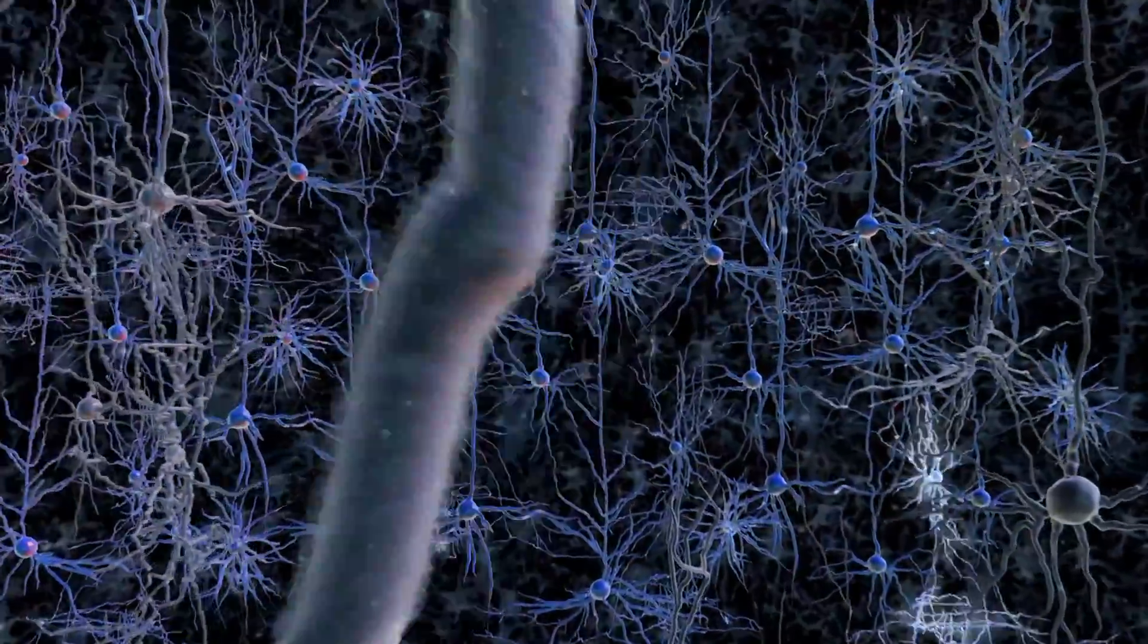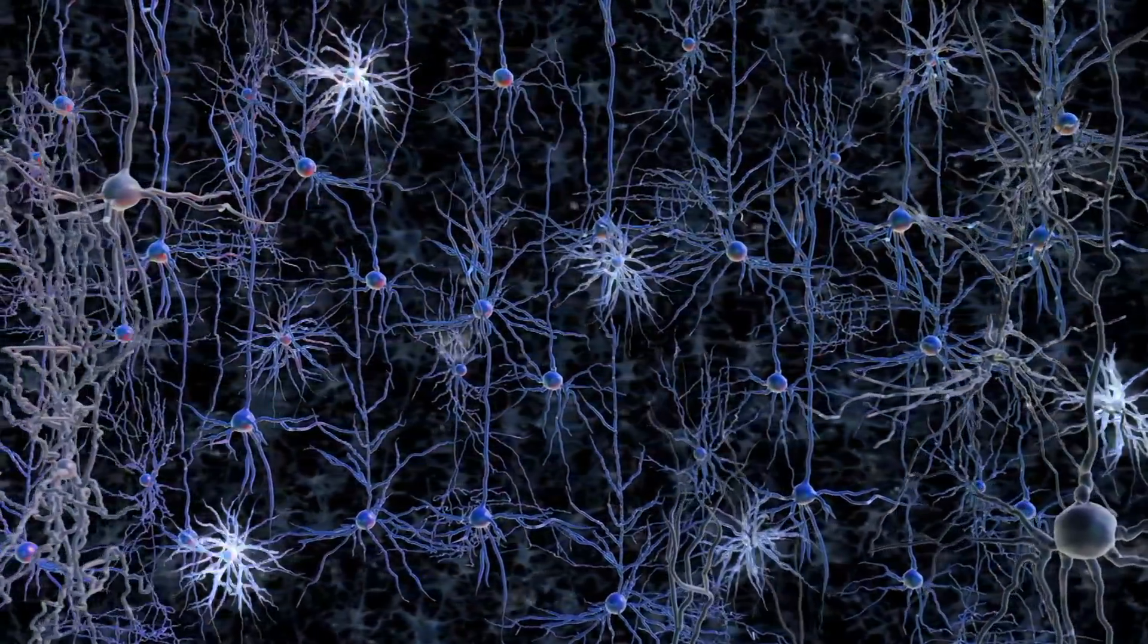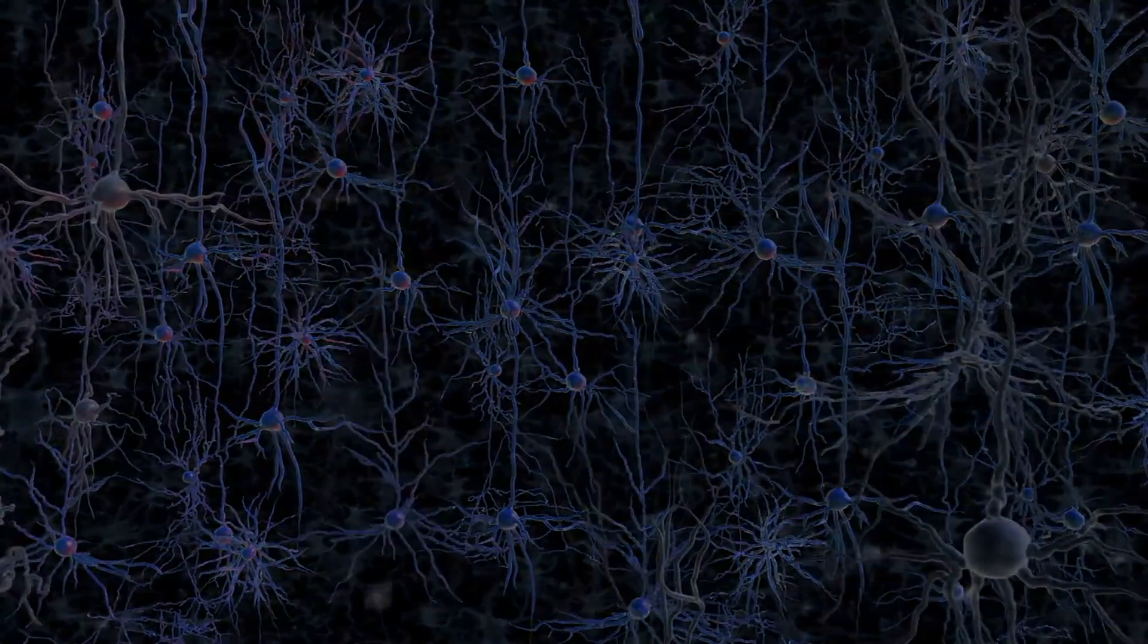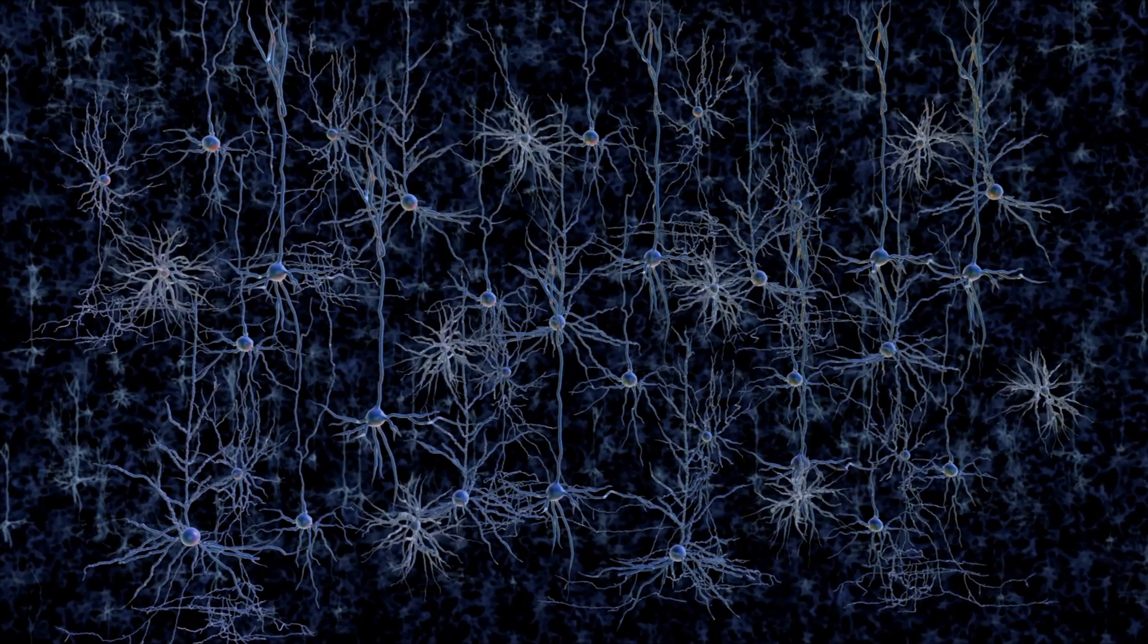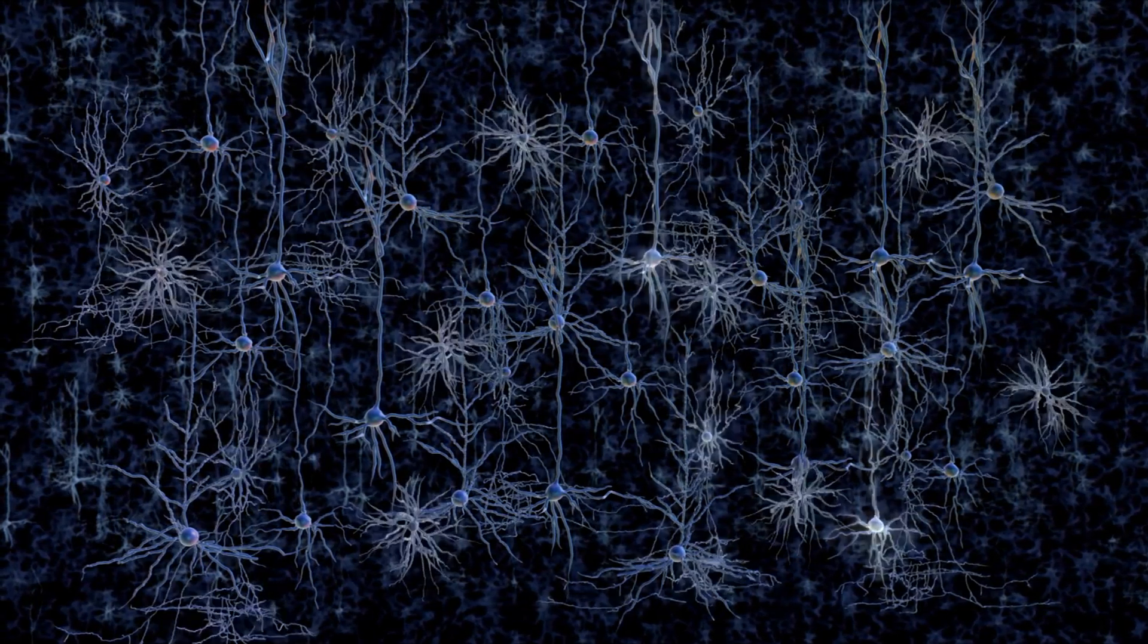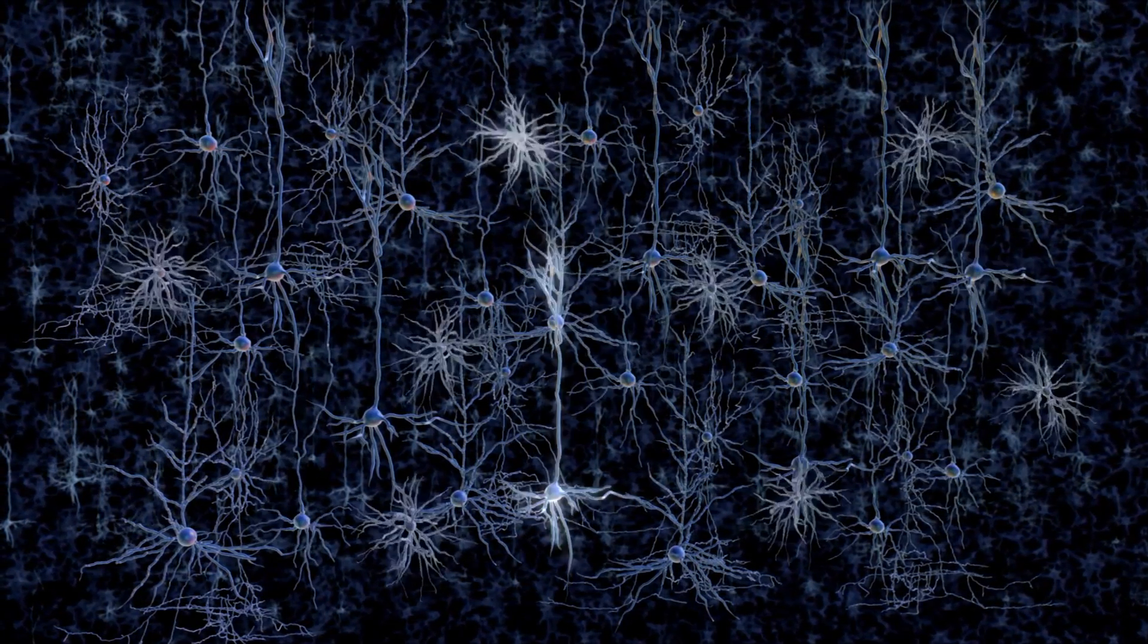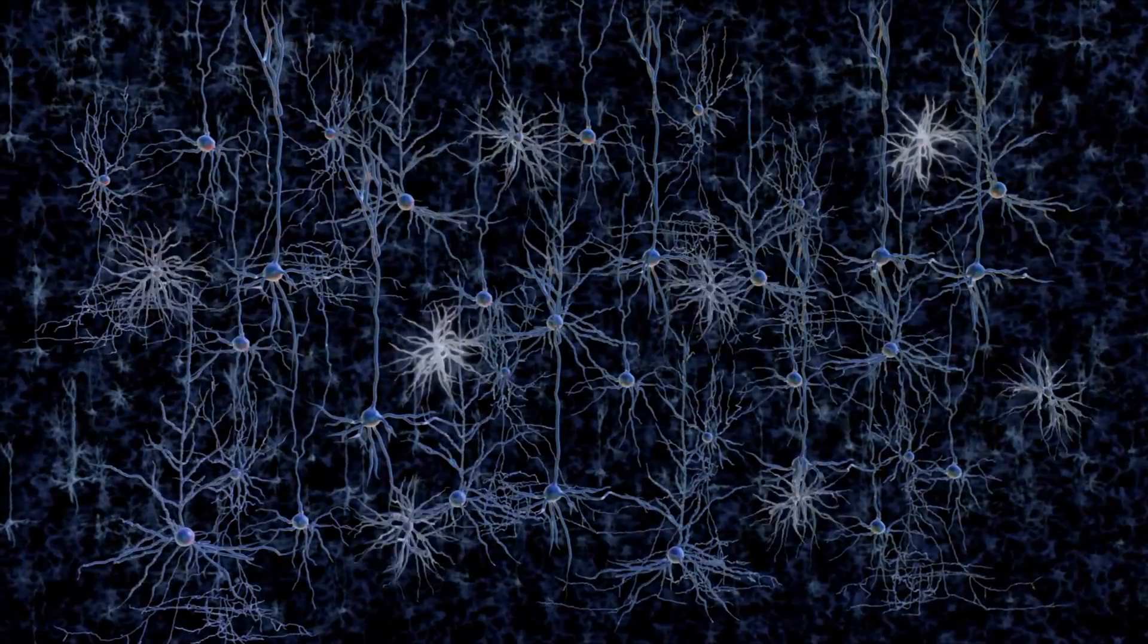Neurons communicate with each other using both chemical and electrical signals. When a neuron is activated by chemical messengers, it produces an electrical pulse that results in similar chemical signals being sent to other neurons to which it is connected.